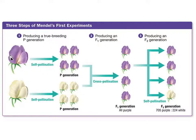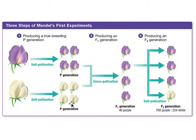Mendel took purple flowers and self-pollinated them for many generations until he created a pure, true breeding generation that reliably always produced purple flowers. He did the same thing with the white plant until he created a true breeding generation of white plants. He called these the P generation — P for parent or parental generation. The next thing Mendel did was cross-pollinate the purple plants with the white plants, creating what's known as the F1 generation, which stands for first filial generation.